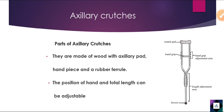The rubber ferrule acts as a stopper at the base. The axillary crutch consists of an axillary pad, hand grip, and rubber ferrule. As a physiotherapist or DPT student, you need to know the parts of this device and clear your concepts. The position of the hand and total length can be adjusted according to the patient's height.